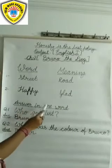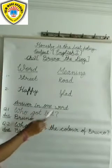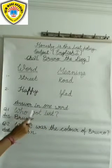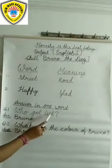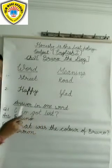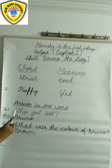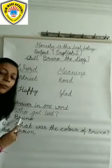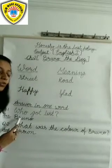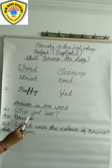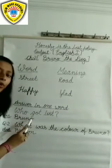Answer in one word. Question 1: Who got lost? Kaun kho gaya tha? Answer: Bruno. Kaun kho gaya tha? Bruno. B-R-U-N-O, Bruno.